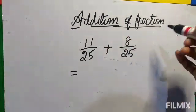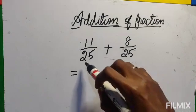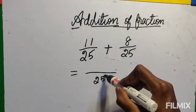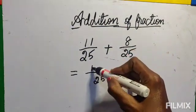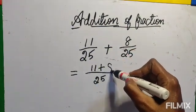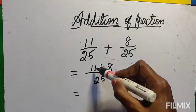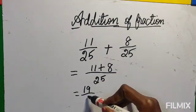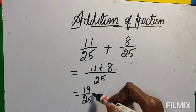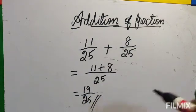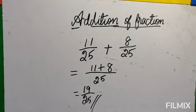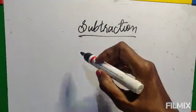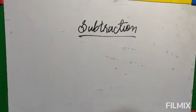Let's see one more example: 11 by 25 plus 8 by 25. Both denominators are the same, so take the common denominator, then write the numerators. Add the numerators: 11 plus 8 equals 19. The answer is 19 by 25. Don't miss the denominator — you must write it. This is the way you write the answer.